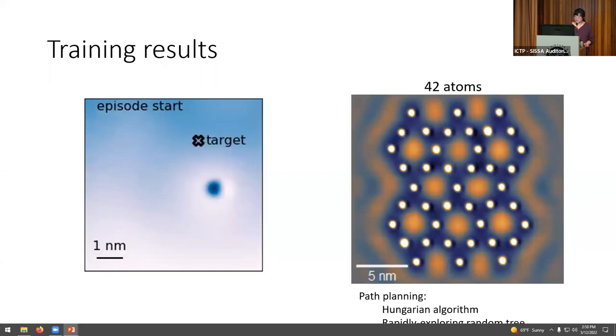So we combine it with two path planning algorithms, the Hungarian algorithm, and the rapidly exploring random tree algorithm. And here as a demonstration, we use them to make this 42 atom structure. So it was able to do it autonomously and with atomic precision.